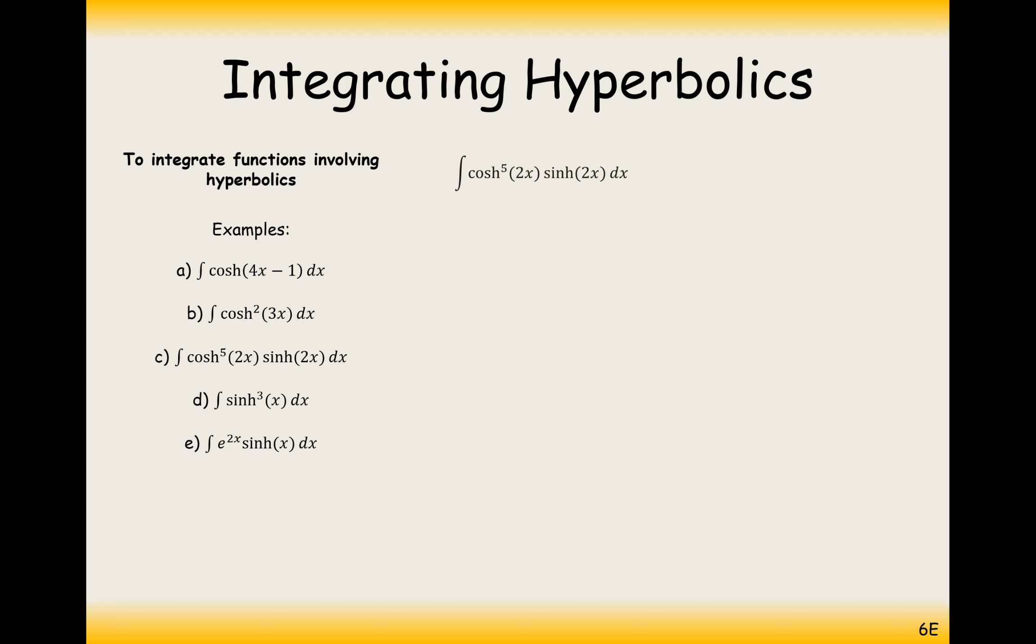The next tricky one is the integral of cosh to the power of 5 2x sinh 2x. We've got one term to the power of something quite high. I'm thinking integration by substitution here, where I'm going to use u equals cosh 2x as my substitution. Whenever you do substitution, you have to replace the dx at the end. So du by dx will be 2 sinh 2x, and you get du divided by 2 sinh 2x.